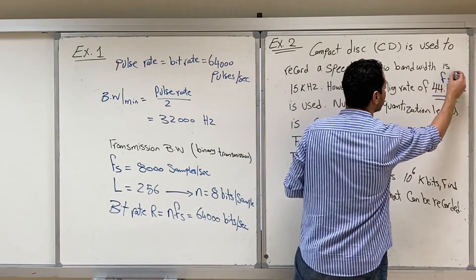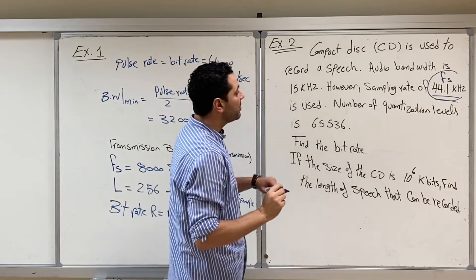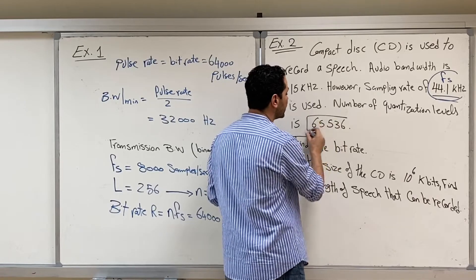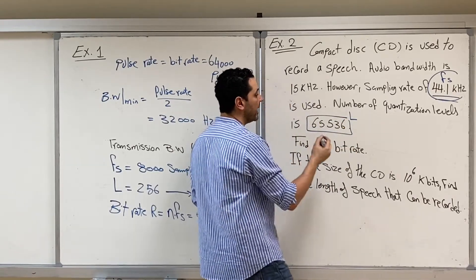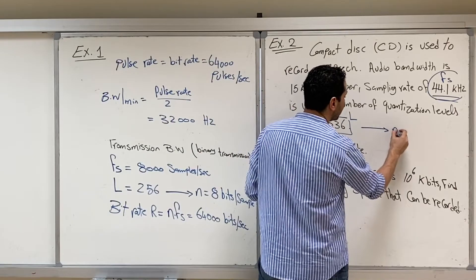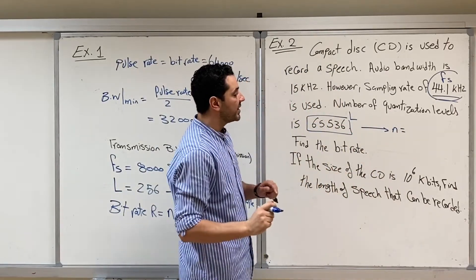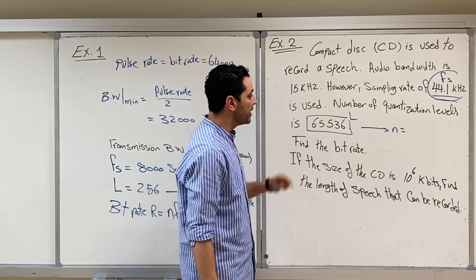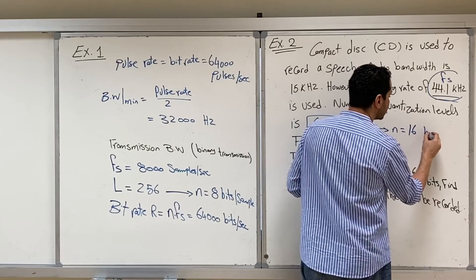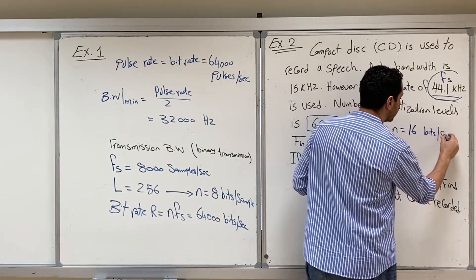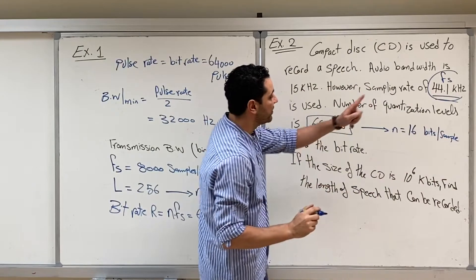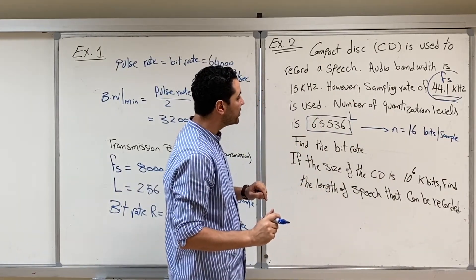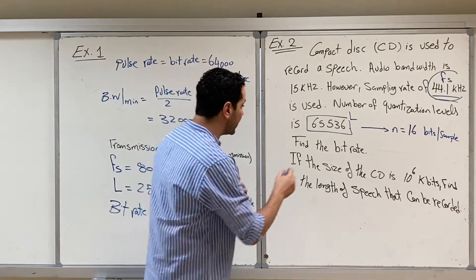The number of quantization levels is 65,536. Taking log base 2 of this number gives n equals 16 bits per sample. Now we have the sampling rate and the number of bits per sample, so we can find the bit rate.